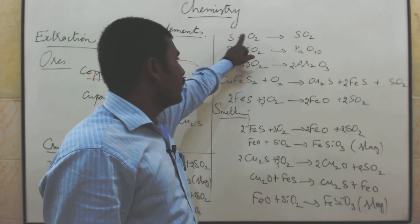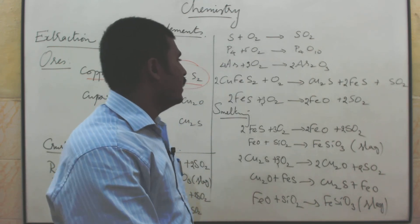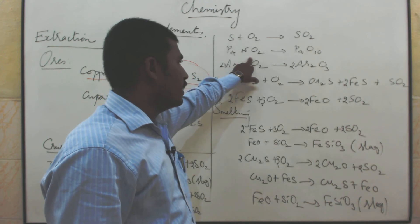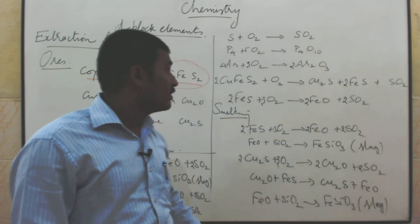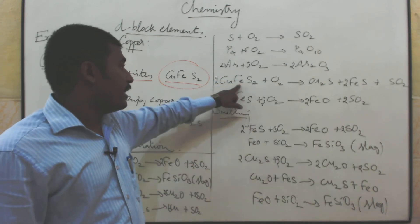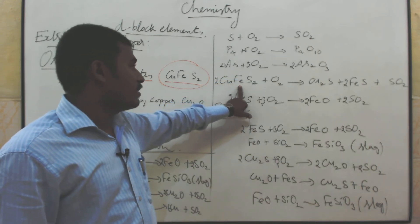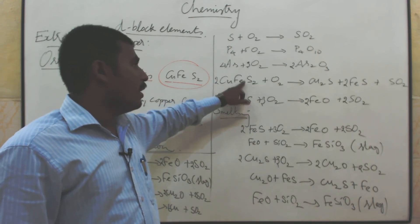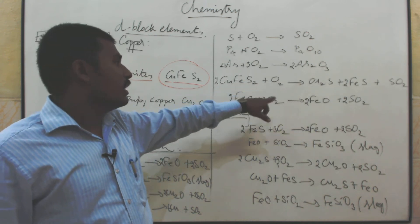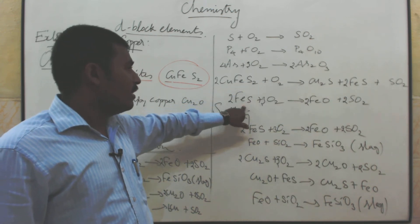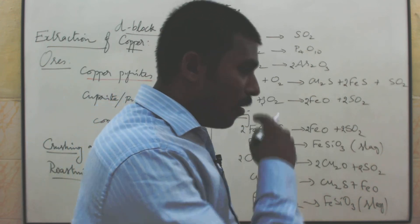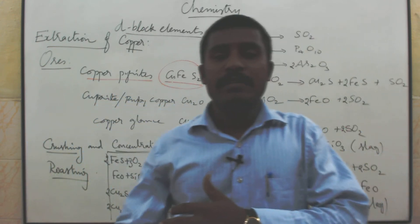Sulphur reacts with air to become sulphur dioxide. Phosphorus reacts with air to give phosphorus pentoxide. Arsenic reacts to give arsenic oxide. Copper pyrite becomes copper sulphide and iron sulphide during roasting. Iron sulphide reacts with air to give iron oxide and sulphur dioxide. After that, the smelting process takes place.